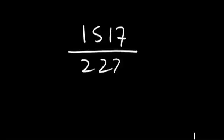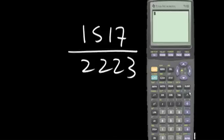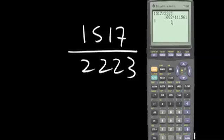There are 1,517 non-survivors out of the 2,223 passengers. Numerically, if we approximate this to the nearest thousandths, the 2 is in the thousandths position. The digit to the right is a 4, so I do not add 1 to the 2. The answer is 0.682.